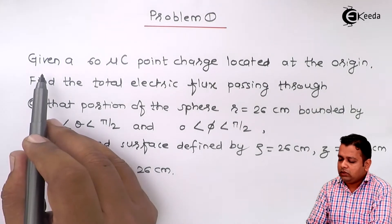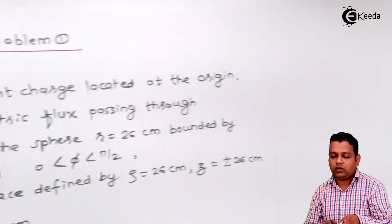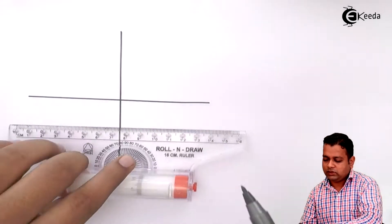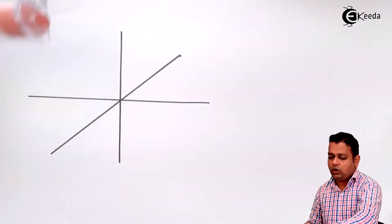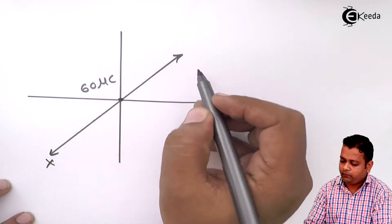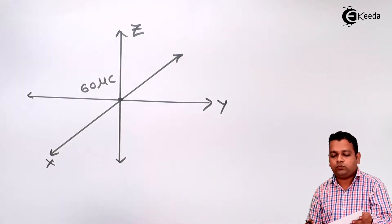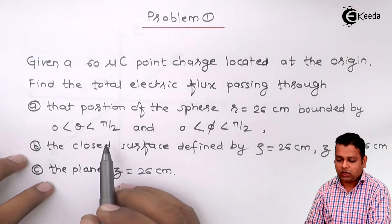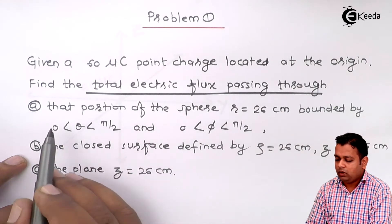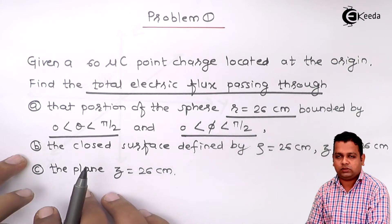The given is a point charge, so first of all in the diagram we will locate the point charge — it is at the origin. We take the help of x, y, z axes. At the intersection of all three axes, the point is located having magnitude 60 microcoulombs. Now as per the problem statement, the charge is located at the origin and we have to find the total electric flux.